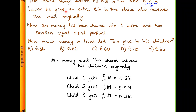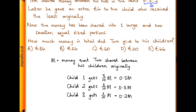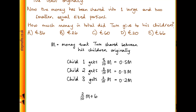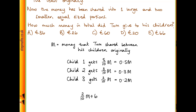But then Tom gave an extra 6 euros to the third child who received the least money originally, and after he did that, the two smaller shares were equal in size. So how can we write that in terms of our M's? Well, if child number 3 got an extra 6 euros and they had 2 tenths M originally, then now they will have 2 tenths M plus an extra 6, and now the two smaller shares are the same size.